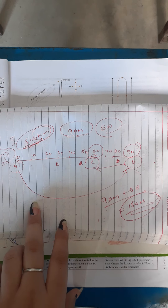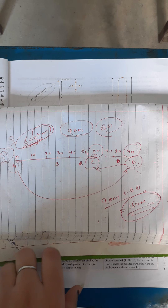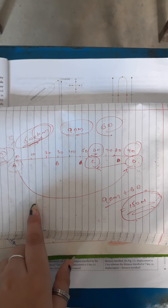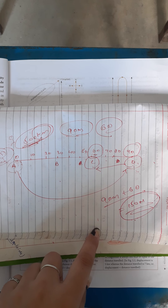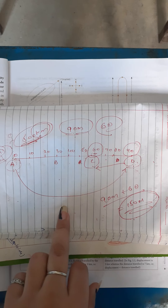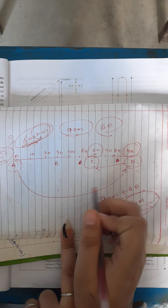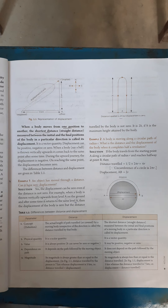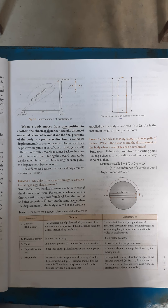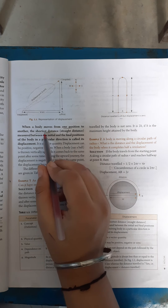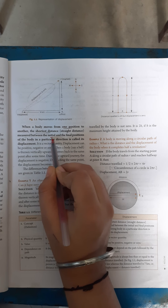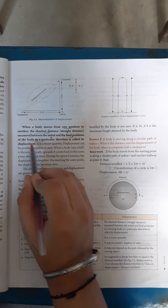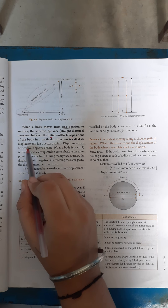Now, the difference between distance and displacement: displacement is the shortest distance and it is a vector quantity, whereas distance is a scalar quantity. Displacement is the shortest distance covered by a moving body — or you can call it the shortest distance between the initial position and the final position of the body in a particular direction. So that is known as displacement.